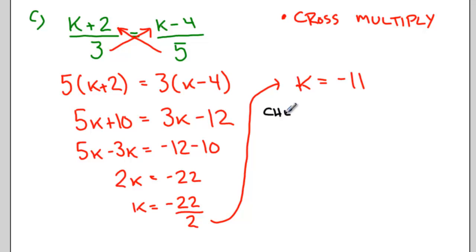Again we can check using a left side right side check. So the left side was k plus 2 over 3. The right side was k minus 4 over 5.